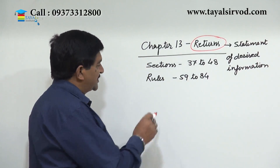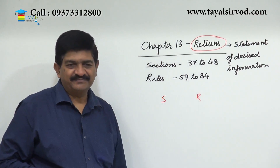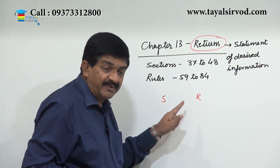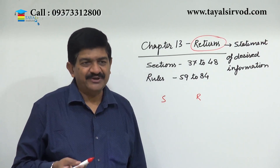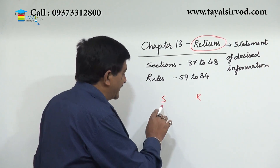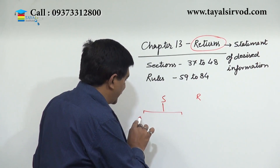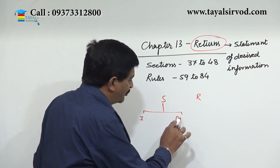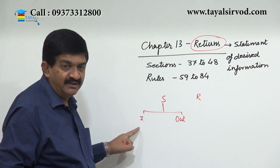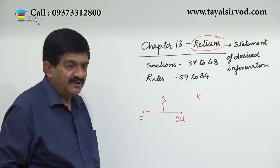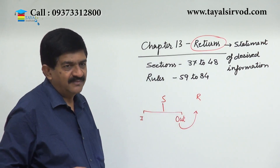So if there is a supplier and there is a recipient — the recipient may be the end consumer or a business consumer, B2B or B2C. The supplier himself is having input supplies and output supplies. These output supplies are supplied to the recipient.